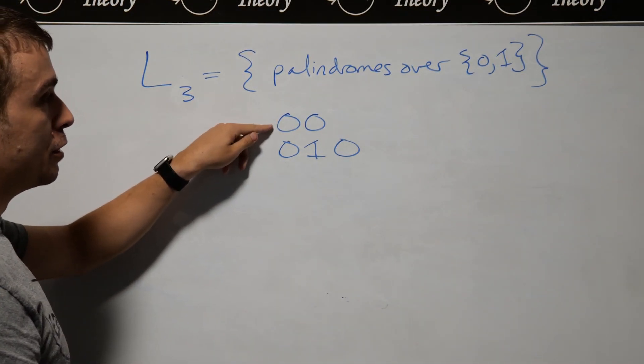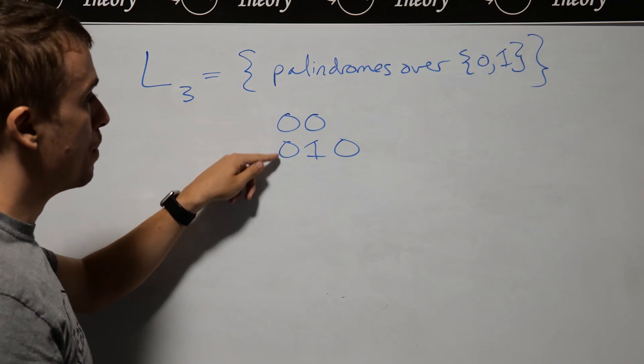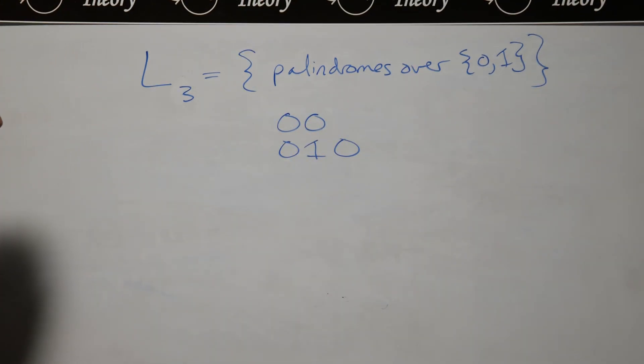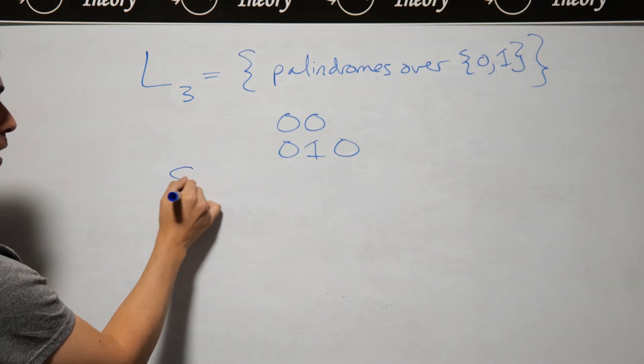Note that we could have a string of length 2 or any even number, as well as any odd number. What we want to do is make a context-free grammar for this. Every context-free grammar has a start variable, so let's make a start variable here.